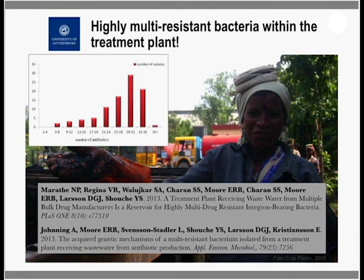We selected one of the most resistant isolates and used DNA sequencing to look at what resistance mechanisms it carried. We confirmed that some resistance genes had been acquired from other bacteria, and some resistance mechanisms arose from mutations in its own DNA. Still, there was a part of the resistance pattern we could not explain using DNA sequencing, suggesting there could be yet unknown resistance mechanisms present that have not been seen in pathogens yet.